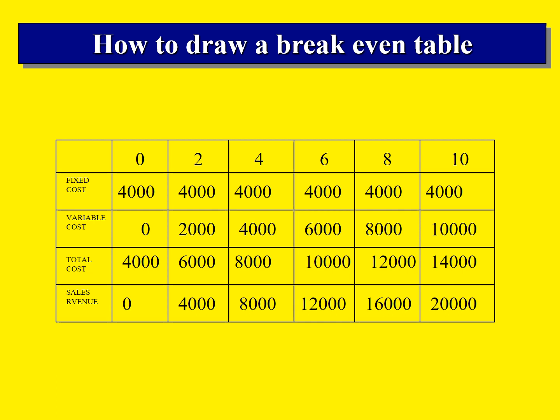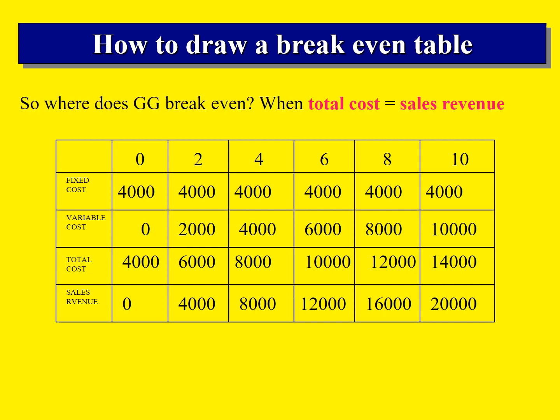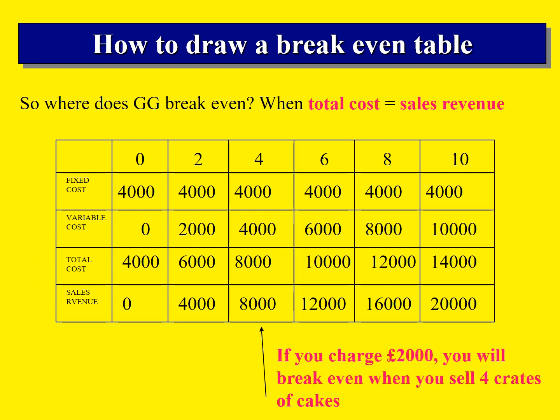So we have drawn a break-even table. Where does Gorgeous Gattas break even? We're looking for the point where total cost equals sales revenue. You can see here total cost is £8,000 and sales revenue is £8,000 — so if we charge £2,000 a crate, we will be able to break even if we sell four crates of cakes. This is how to draw up a break-even table.